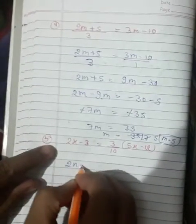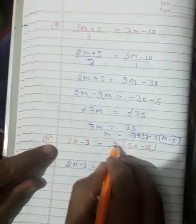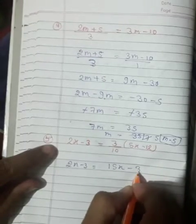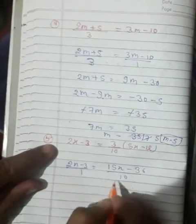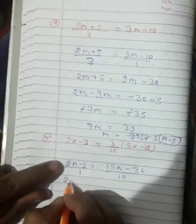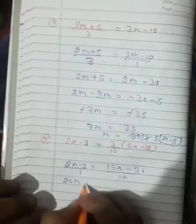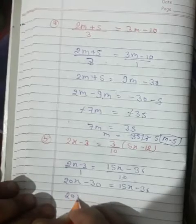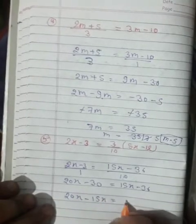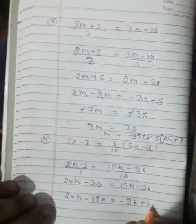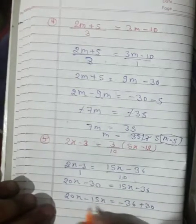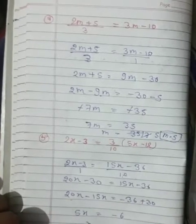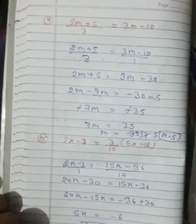See here: 2x minus 3 is equal to 3 multiplied by 5, giving 15x; 3 multiplied by 12 gives 36, upon 10. By using cross multiplication: 10 multiplied by 2 gives 20x; 10 multiplied by 3 gives 30, is equal to 15x minus 36. So 20x minus 15x is equal to minus 36 plus 30. Subtracting 15 from 20, we get 5x is equal to minus 6. Therefore x is equal to minus 6 upon 5. This is our answer.